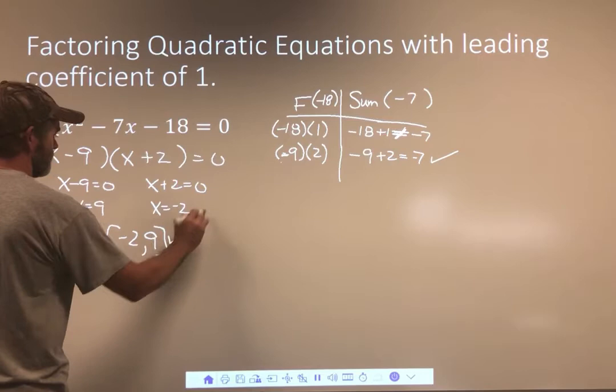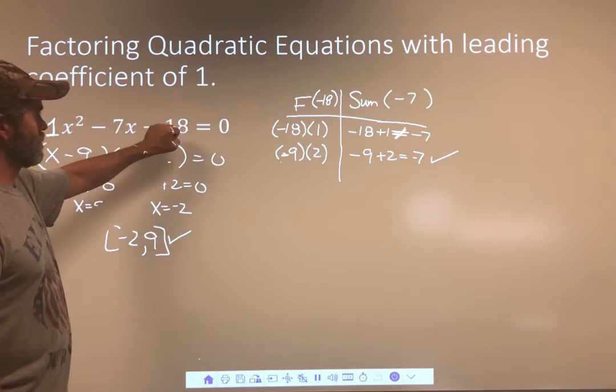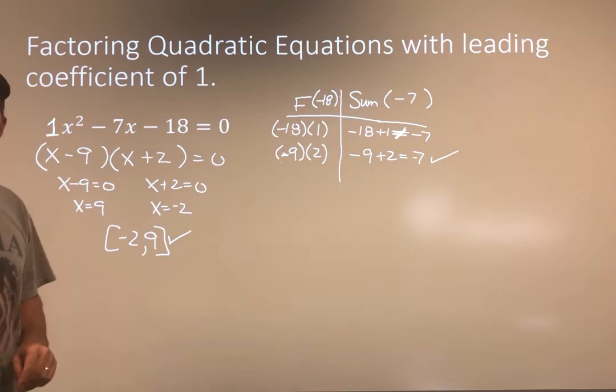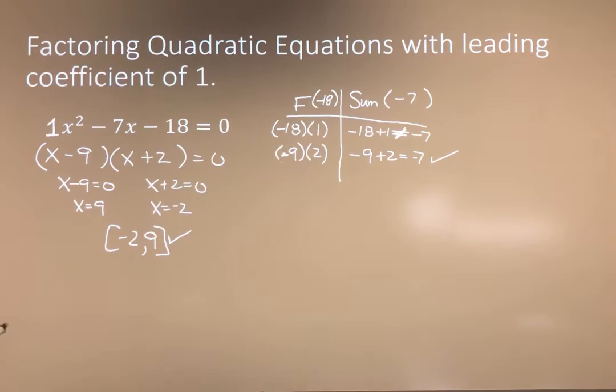A lot of people will just focus on what times what is this middle product, and what added together is this middle sum — and not necessarily pay attention to the 1. But when this becomes something other than 1, it becomes problematic. So I'm starting you off correctly that way. Two more examples with a leading coefficient of 1.